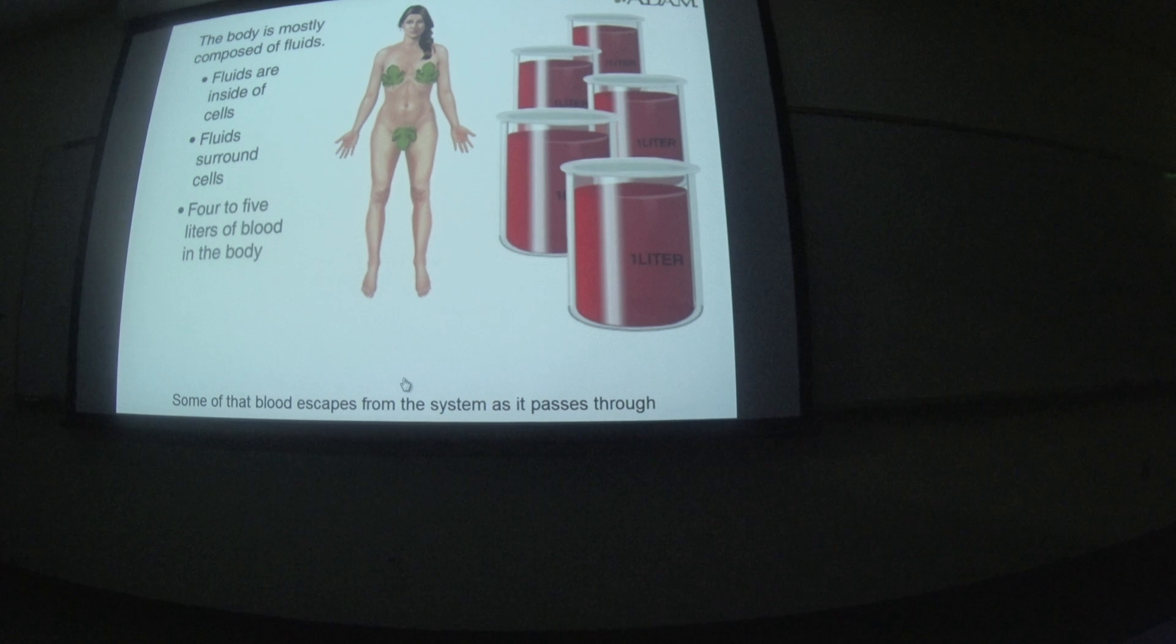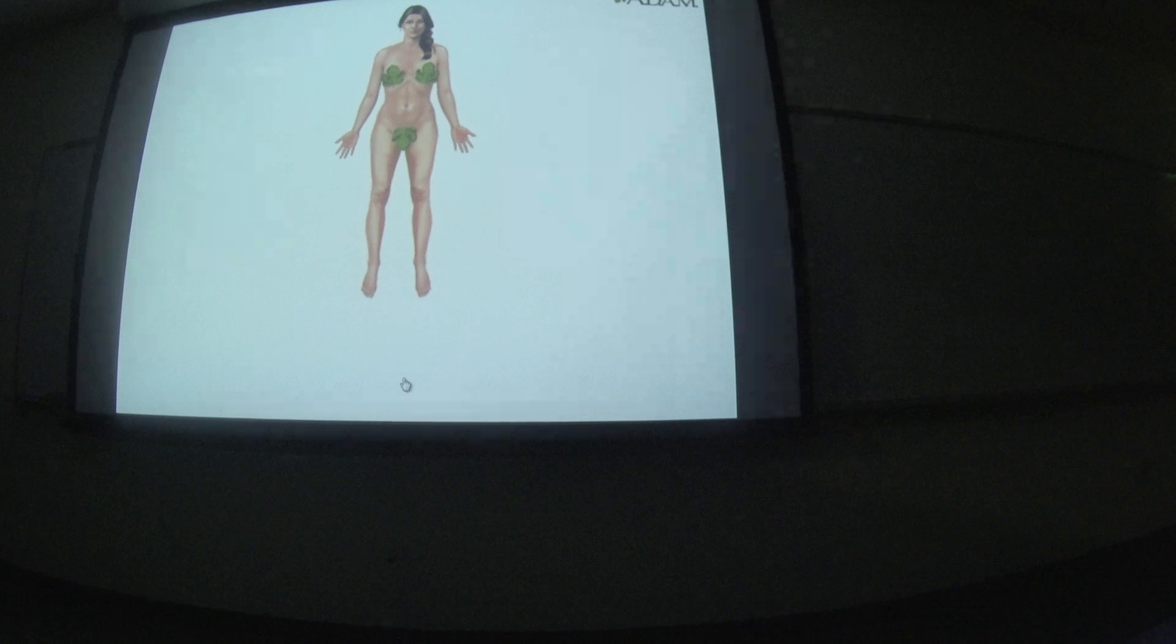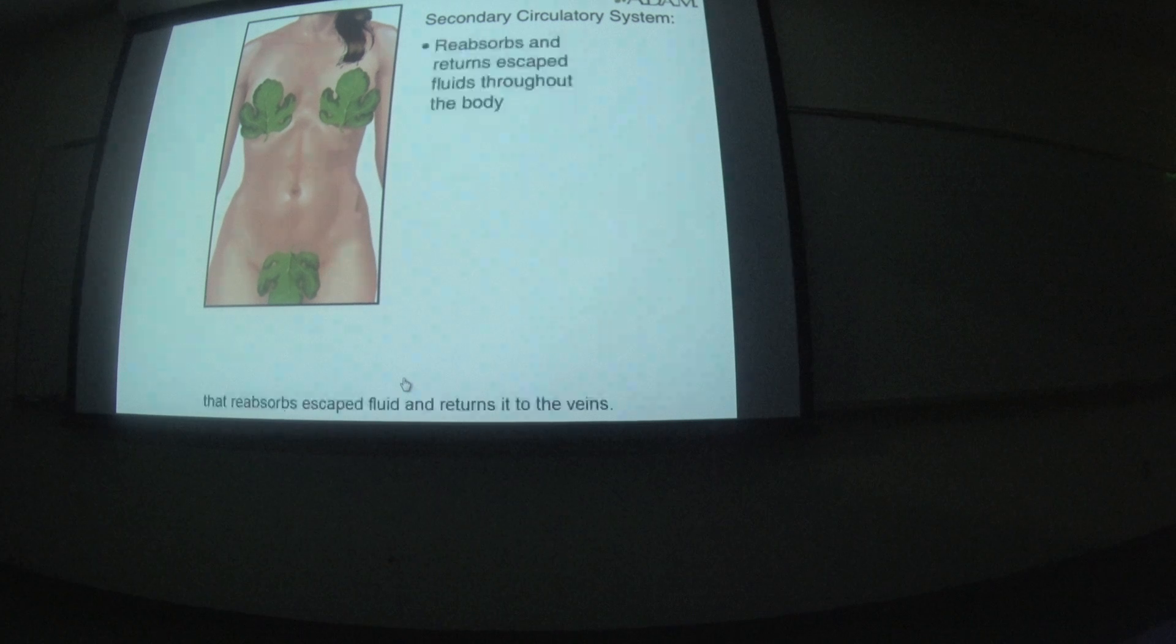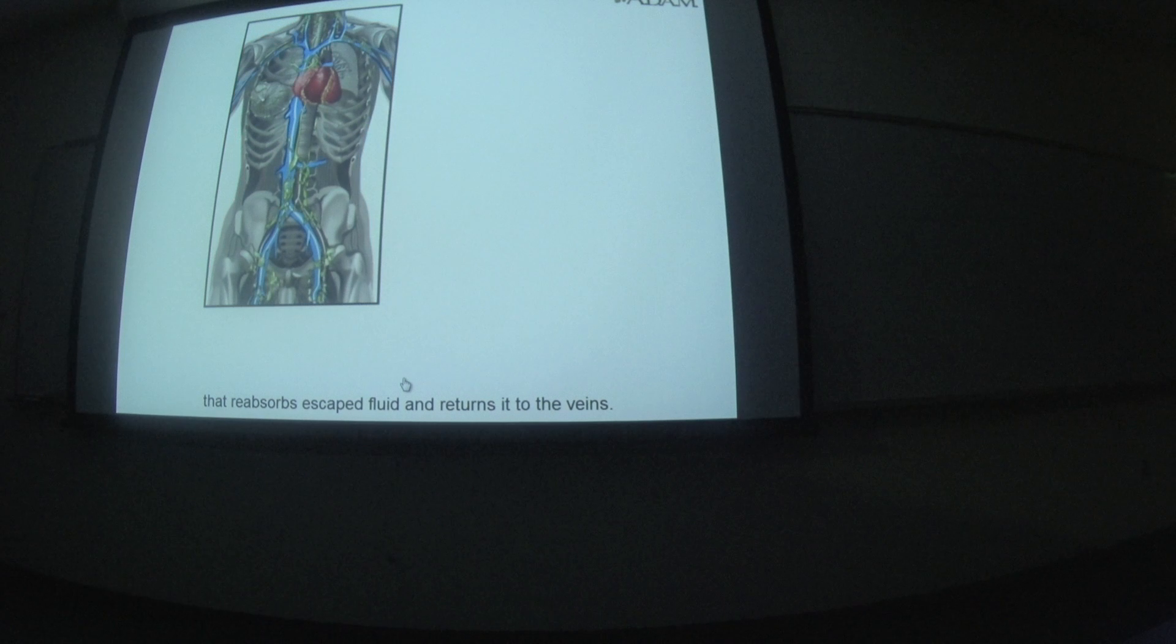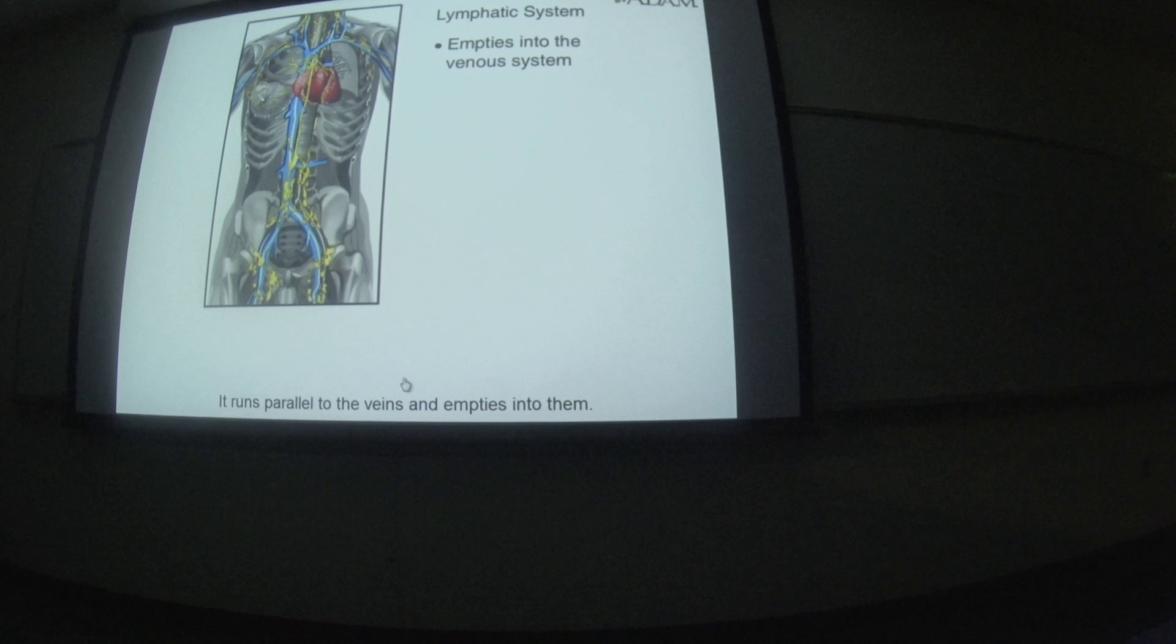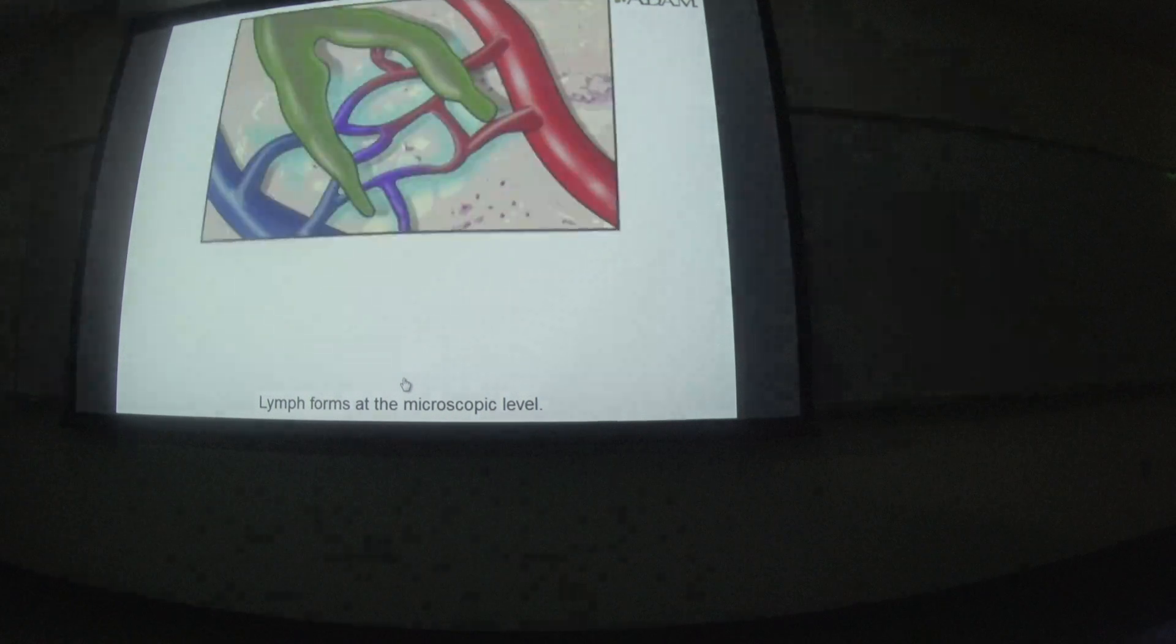Some of that blood escapes from the system as it passes through tiny blood vessels called capillaries in the body tissues. Fortunately, there is a secondary circulatory system that reabsorbs escaped fluid and returns it to the veins. That system is the lymphatic system. It runs parallel to the veins and empties into them. Lymph forms at the microscopic level.